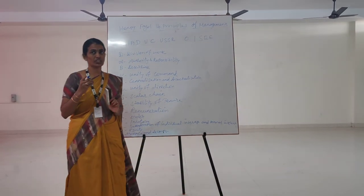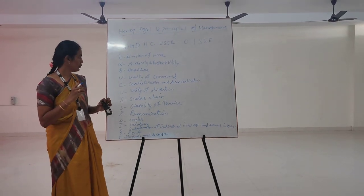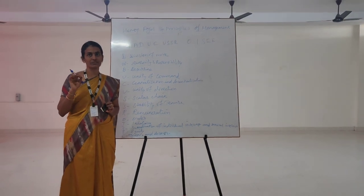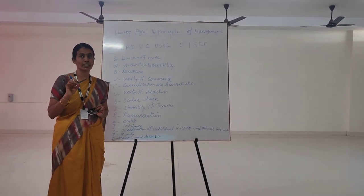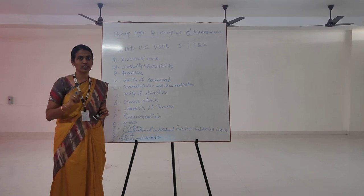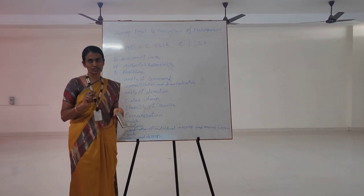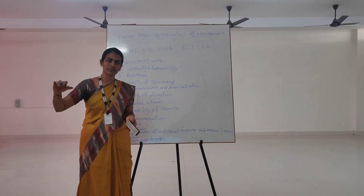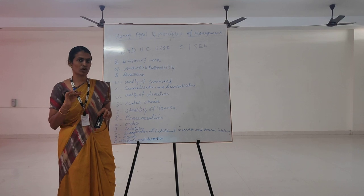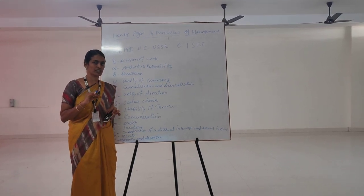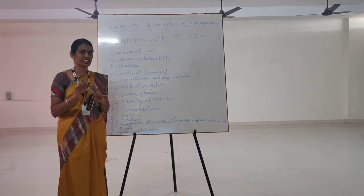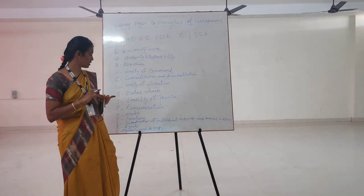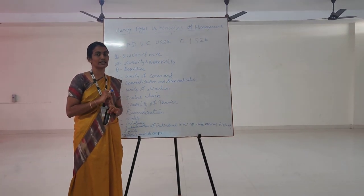The next one is Unity of Direction. Each group of activities with the same objective must have one head with only one plan. Unity of direction relates to common tasks and reporting, and grouping of activities, meaning groups about conditions in those groups.